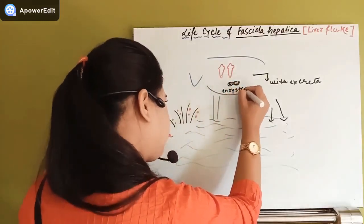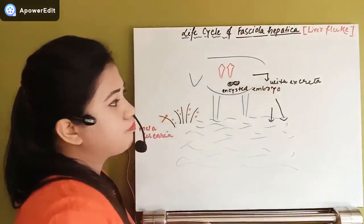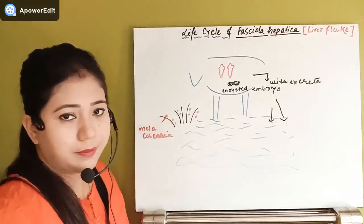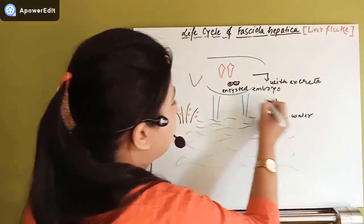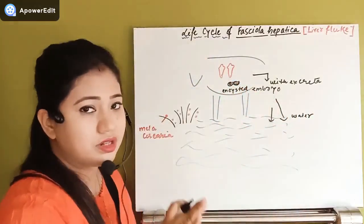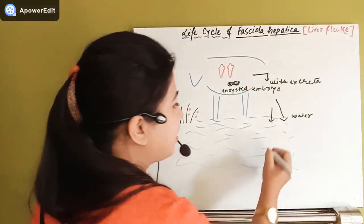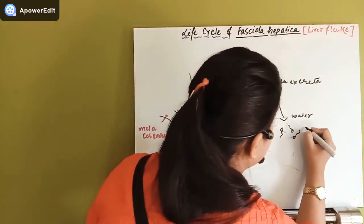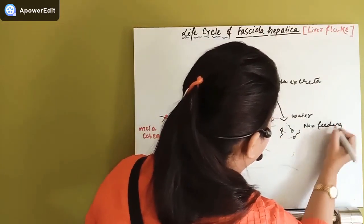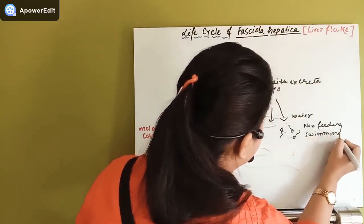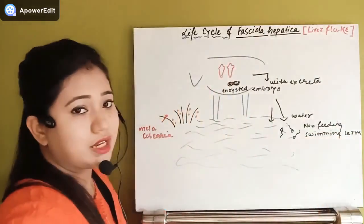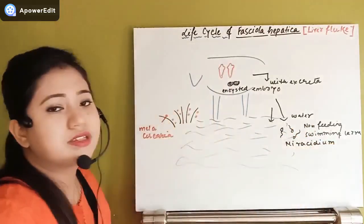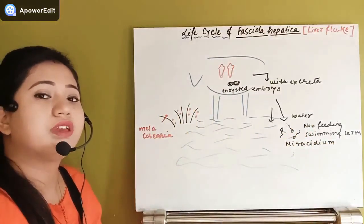Whenever the sheep or goat removes excreta, the encysted embryo comes out with it and enters the water nearby. In the water, the cyst wall sheds and the embryo transforms into a ciliated, non-feeding, swimming larva. This larva is known as the miracidium larva, which freely swims in the water.